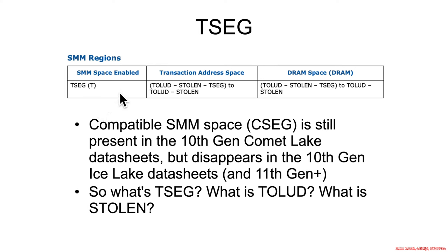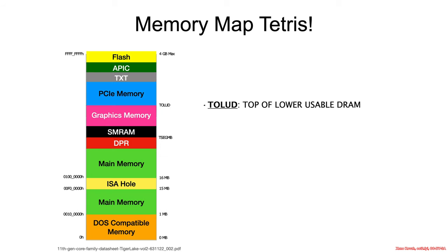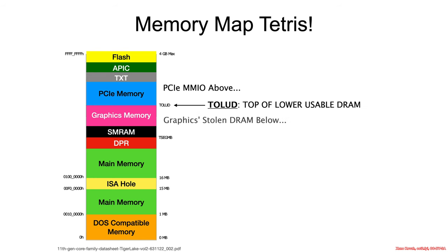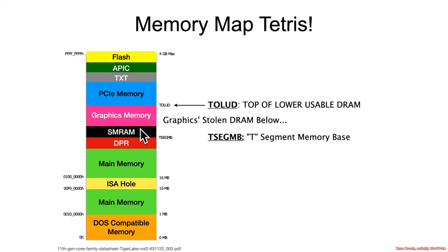TSEG is defined as Toled minus Stolen minus TSEG, to Toled minus Stolen. In our memory map, Toled was listed there, and above Toled is PCI memory — the MMIO space used for things like the extended configuration address space. Below Toled is the graphics memory, or graphics stolen memory as the documentation calls it. And then beyond that is TSEG.